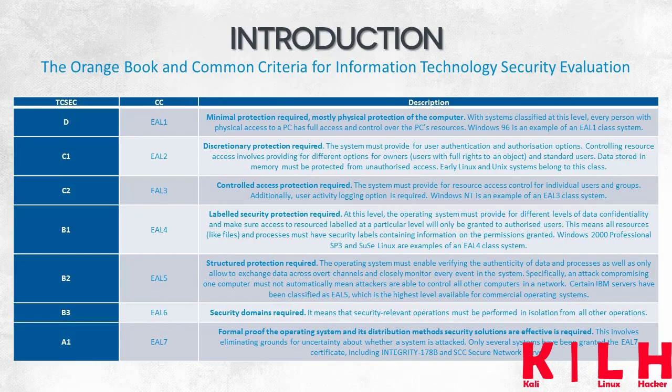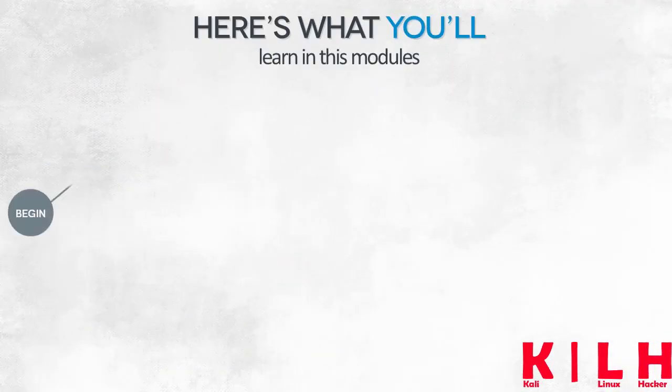Some specialized versions of systems implemented on specific machines may be classed at this level. The sixth level systems require the provision of process isolation — each security-critical operation must be separate and independent in the system. The seventh and highest level is assigned to those systems that are able to formally — for example, mathematically — verify their security. The systems have to effectively exclude any possibility of successful attacks. The security of these systems can't depend on configuration or user behavior; it has to offer formal assurance of full protection. Level 7 encompasses several devices, not systems, and they are definitely not commercially available.